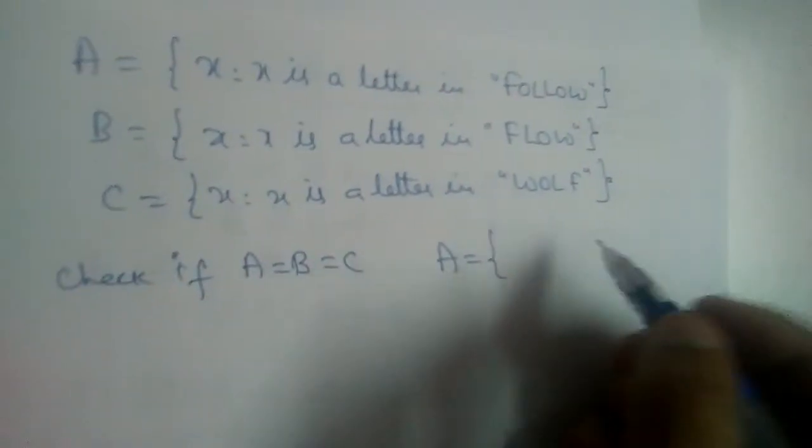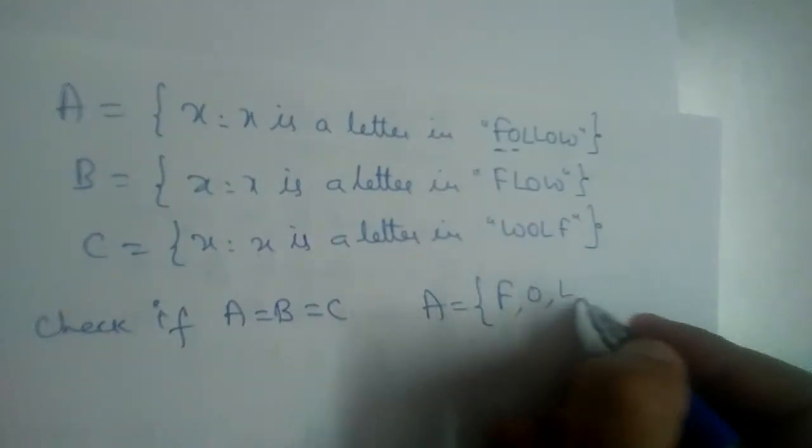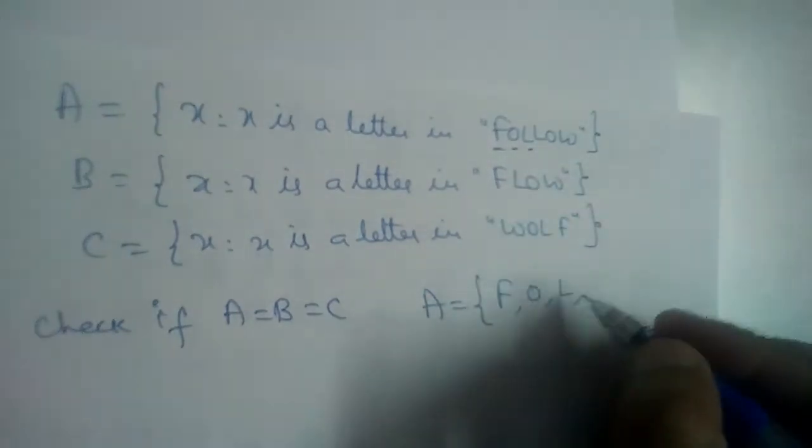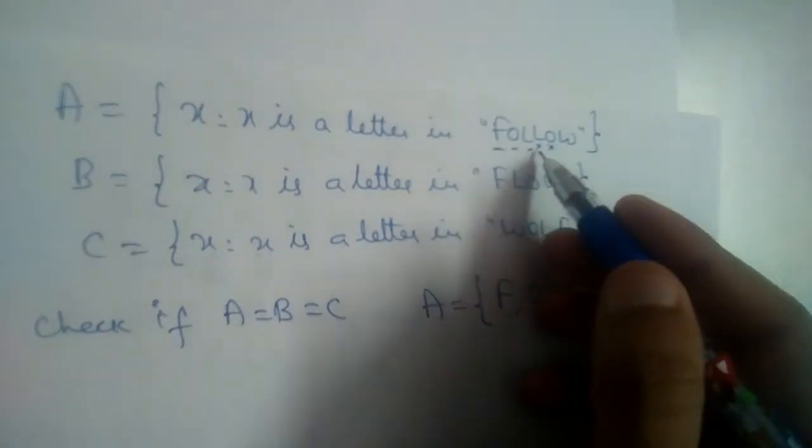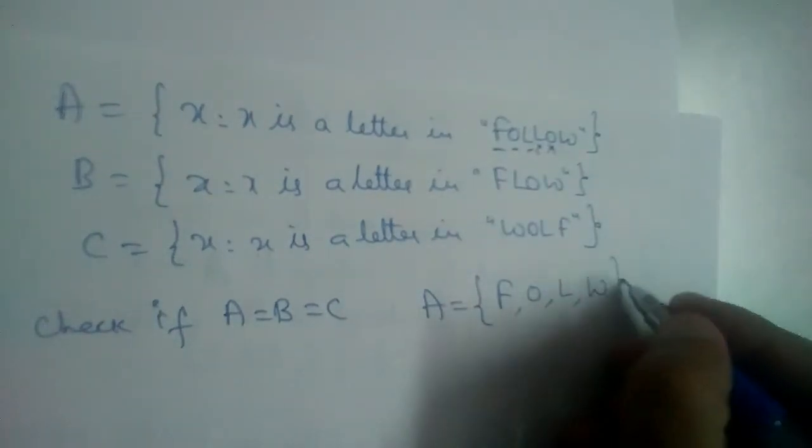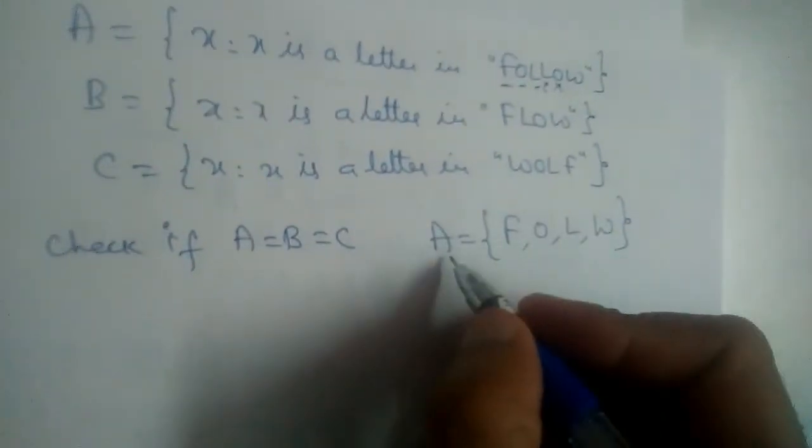So let us write set A. F, O, L... L we should not write again, isn't it? Elements should not be repeated and L is repeated here, so we should not write L, we should not write O, and finally W. So F, O, L, W are elements of set A.